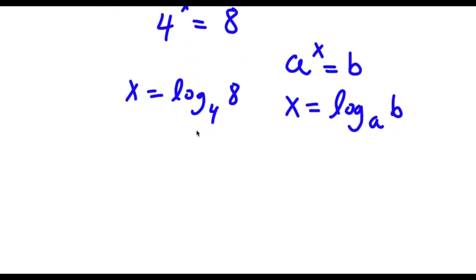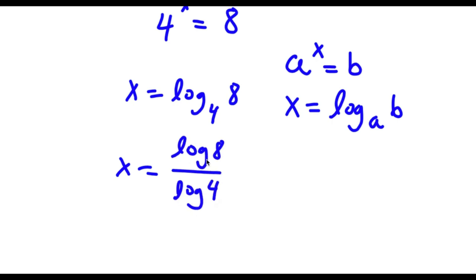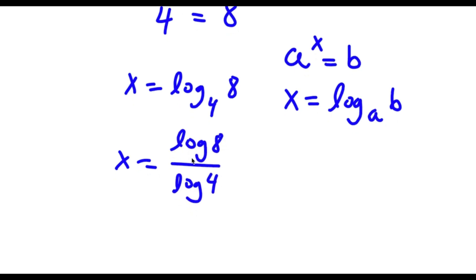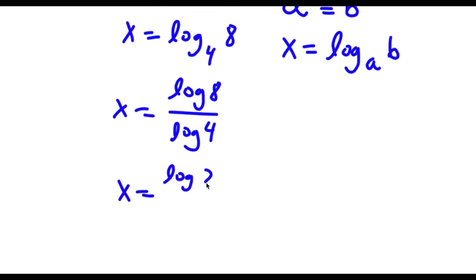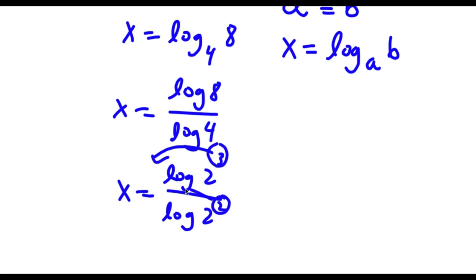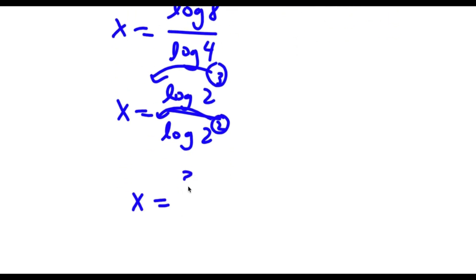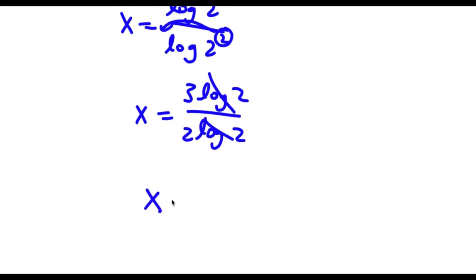And now this is the same thing as log 8 over log 4. Now log 8 — well 8 is the same thing as 2 to the power of 3, and 4 is the same thing as 2 to the power of 2. So I have log 2 to the power of 3 over log 2 to the power of 2. I can simply move the exponent to the front for both of these, so now I have x is equal to 3 times log 2 over 2 times log 2. The log 2 simply cancel out, so I'm again left with x equals 3 over 2.